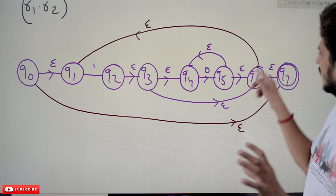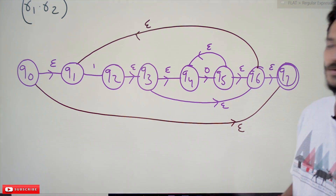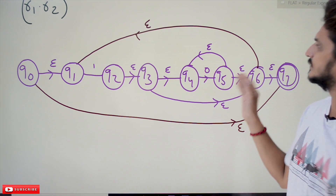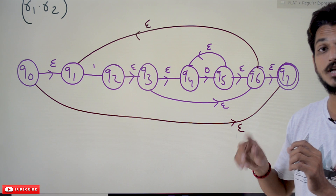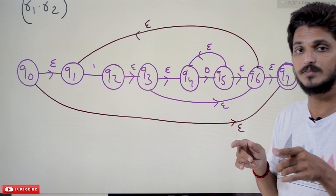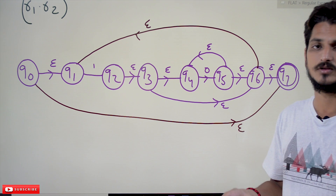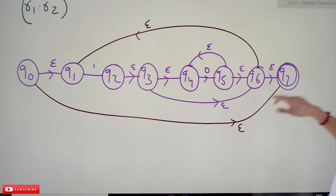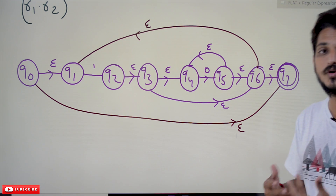To allow repetition, we add a transition back from the end of the 10* automata to the start of the 1, so after finding 10* you can repeat the pattern any number of times. Also, (10*)* accepts epsilon — it can repeat 0 times as well — so q0 is connected to the final state using an epsilon move. This is how we write the finite automata for (10*)*.